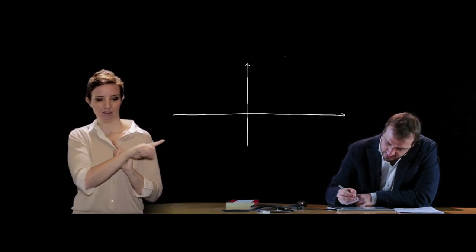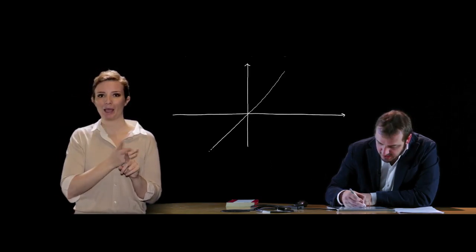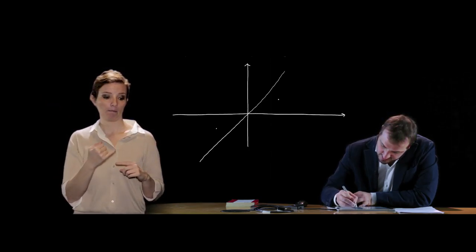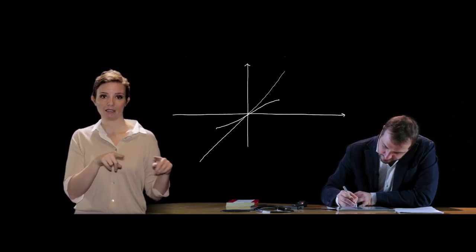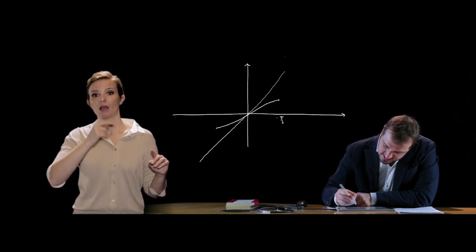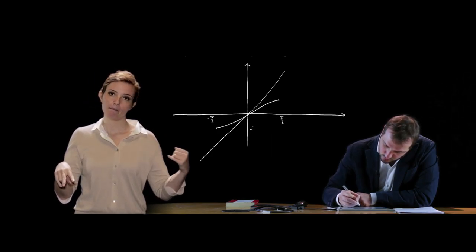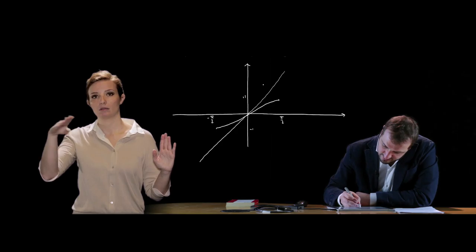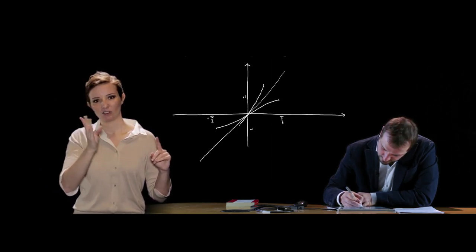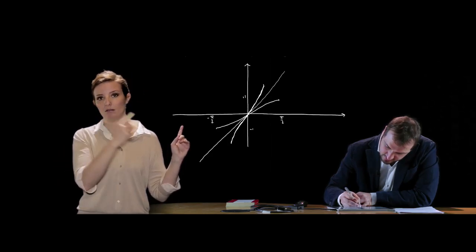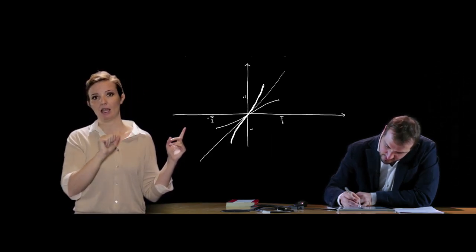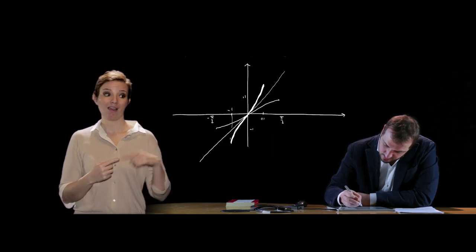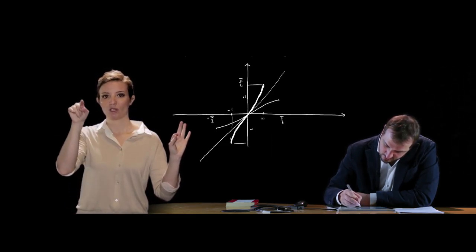Il grafico dell'arco seno si ottiene sfruttando la simmetria rispetto alla bisettrice del primo e terzo quadrante. La funzione seno nell'intervallo [−π/2, π/2] ha un certo andamento; la funzione arco seno ha un andamento simmetrico. Si scambiano dominio e codominio: i valori ±1 diventano ascisse, i valori ±π/2 diventano ordinate.